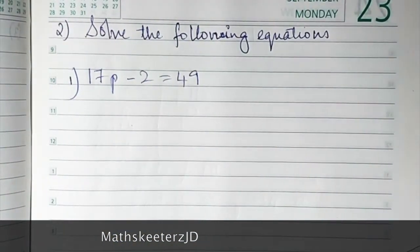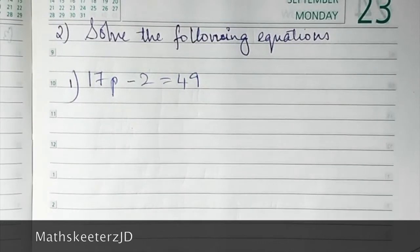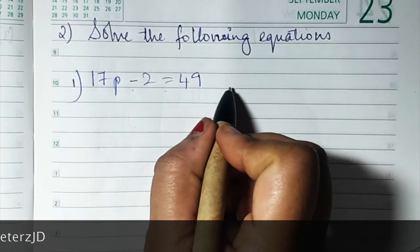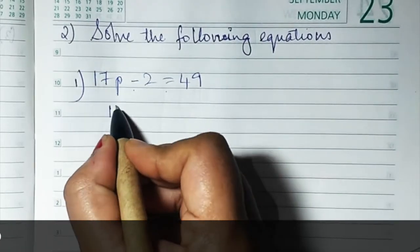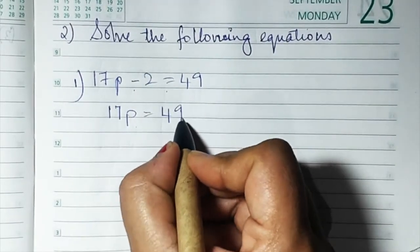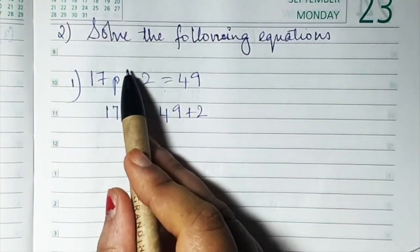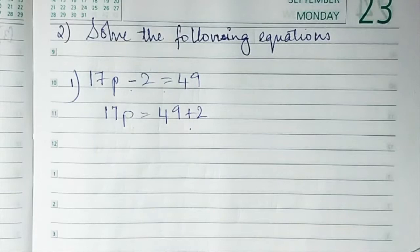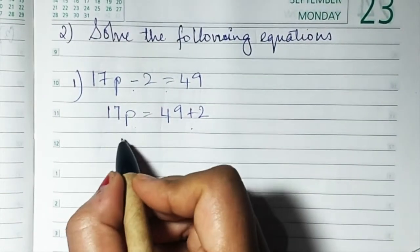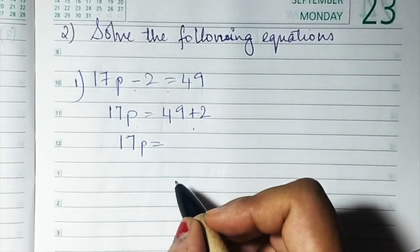We have to find out the value of p. See, this is an equal to sign and there is minus 2 on this side. When it goes on the other side, it becomes plus 2. So we write 17p equals 49 plus 2. That means 17p is equal to 51.